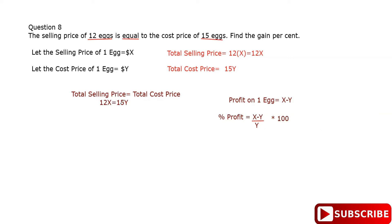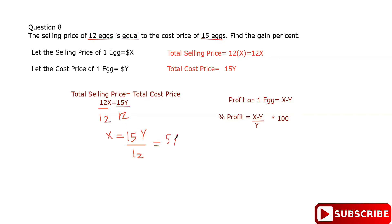We said 12x equals 15y, so let's make x the subject and rewrite everything in terms of y. Dividing both sides by 12, x equals 15y over 12, which simplifies to 5y over 4.